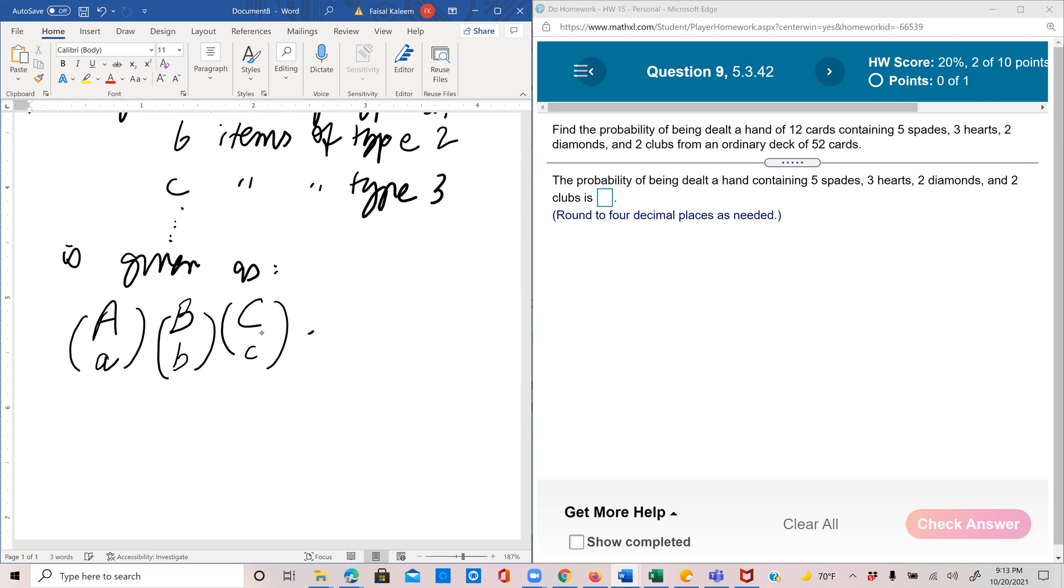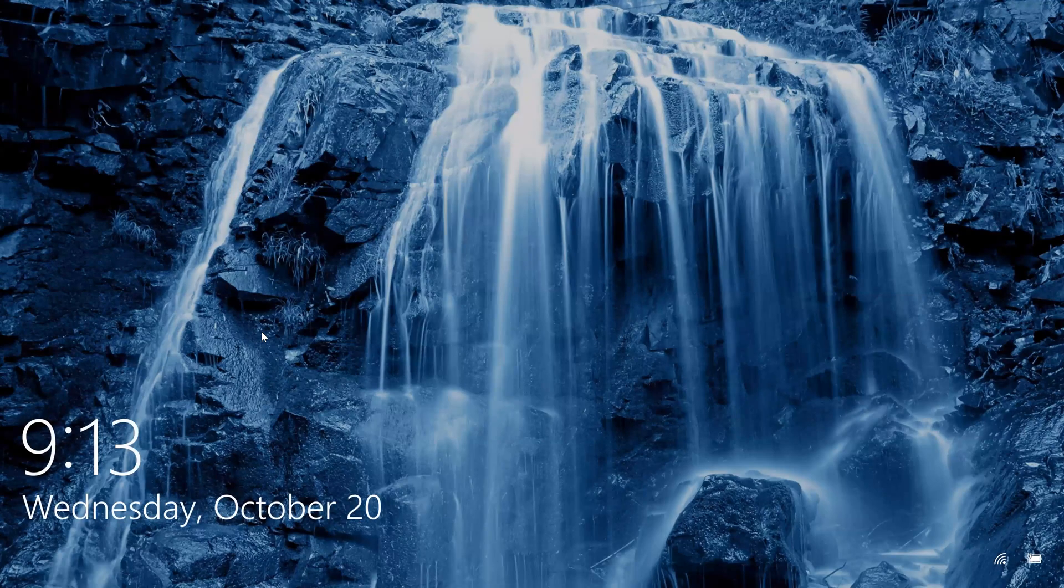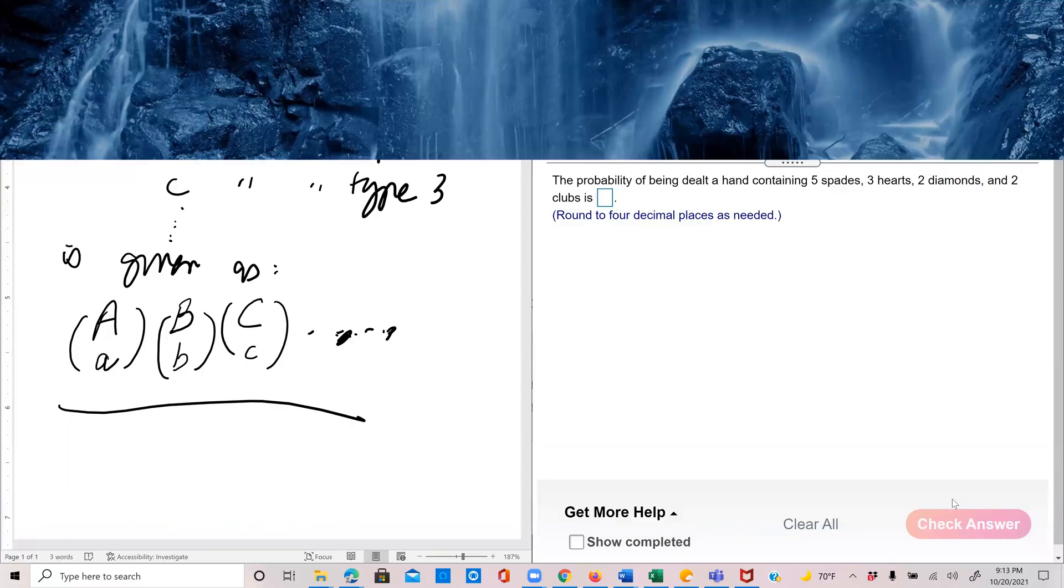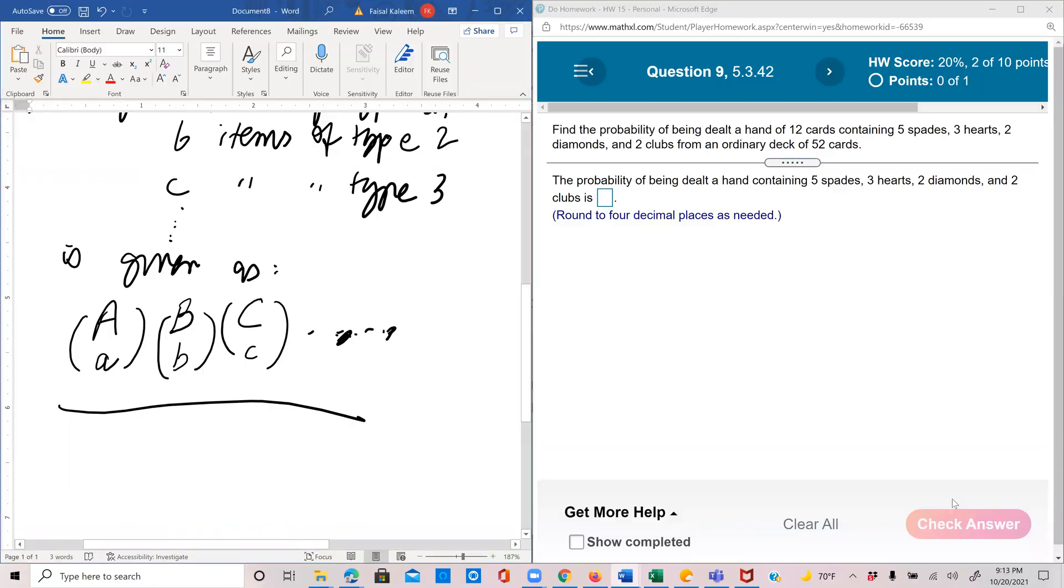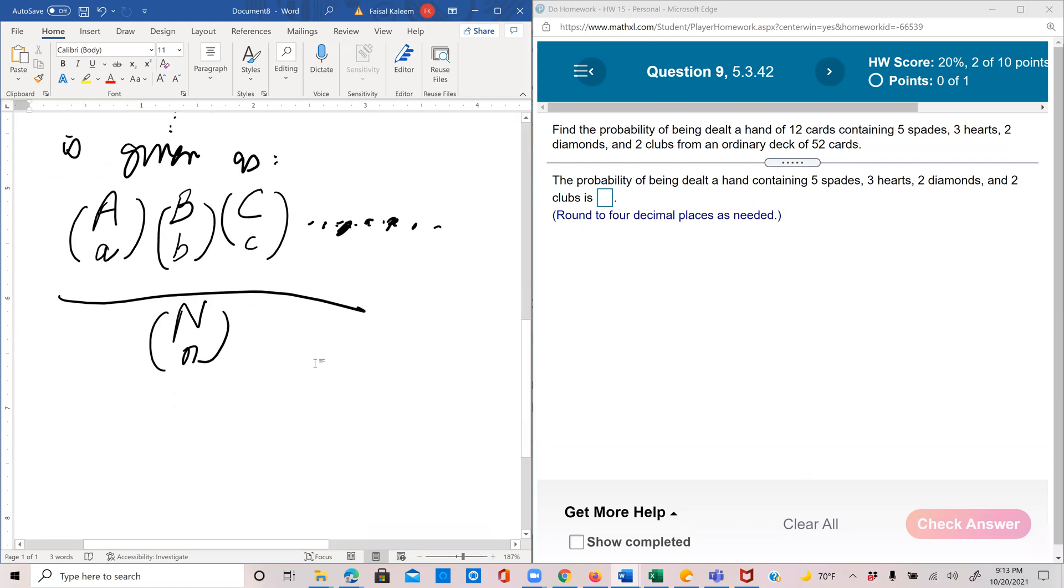And then you will divide it by big N choose little n. We already mentioned what big N is. Big N is the total number of items. And little n is the number of items picked.